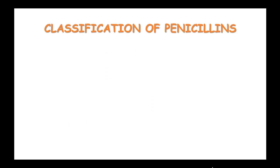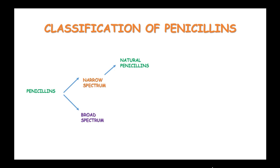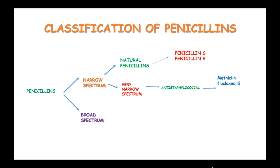Penicillins can be classified as narrow spectrum and broad spectrum penicillins. In the narrow spectrum, we have natural penicillins, which include Penicillin G and Penicillin V. Also in the narrow spectrum, we have very narrow spectrum penicillins such as anti-staphylococcal penicillins, for example Methicillin, Flucloxacillin, Dicloxacillin, Nafcillin and Oxacillin. In the broad spectrum, we have those with extended spectrum and anti-pseudomonal penicillins.